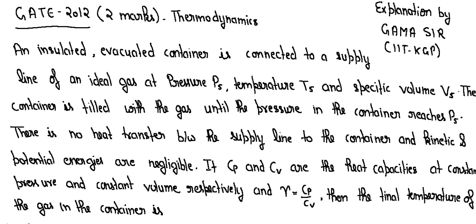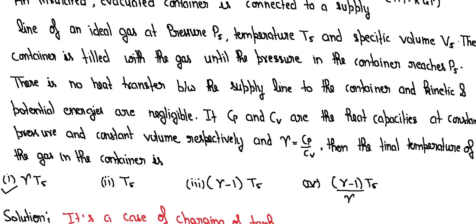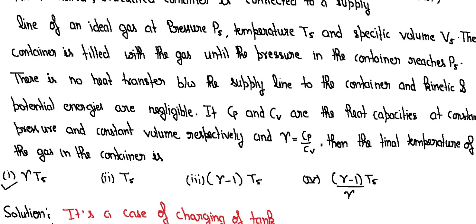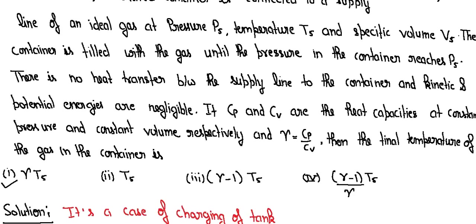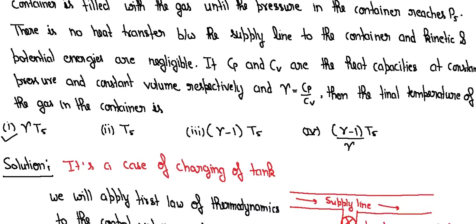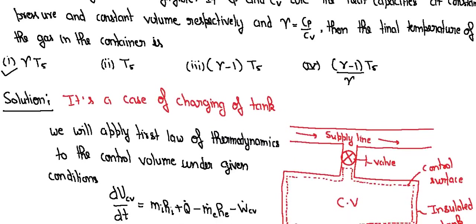If CP and CV are the heat capacities at constant pressure and constant volume respectively and gamma specific heat ratio is defined as gamma equals CP by CV, then the final temperature of the gas in the container is, these are options.